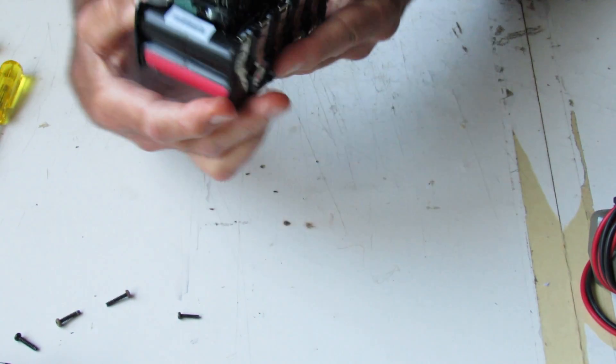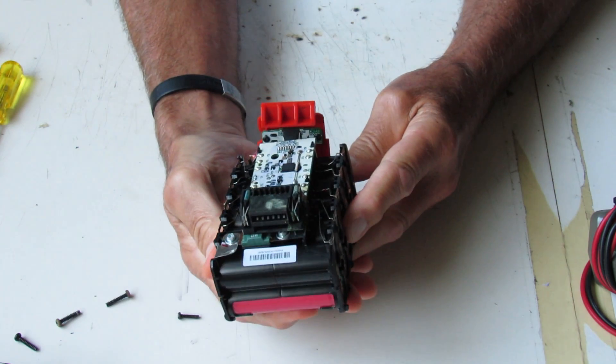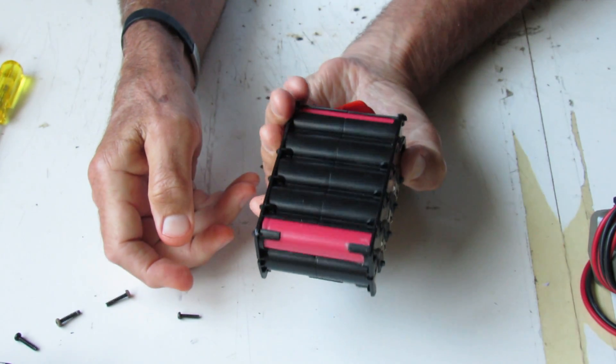10 to 1.5 amp hour lithium ion cells in series. You've got your control board on top for charging.